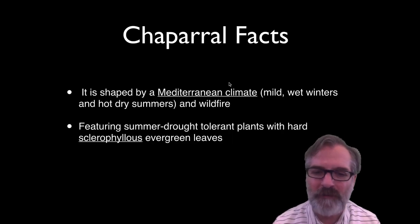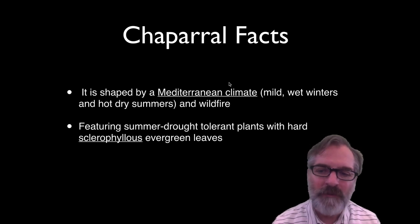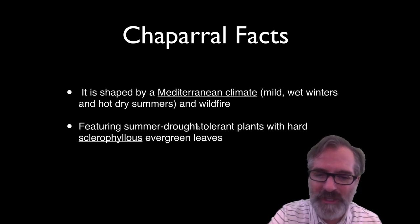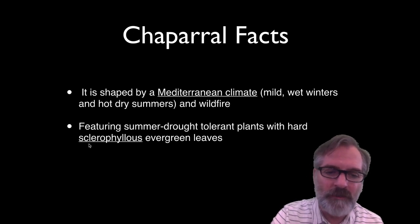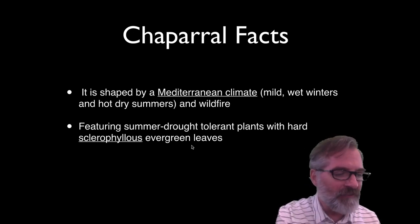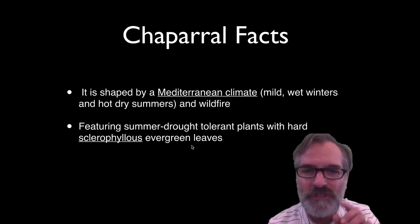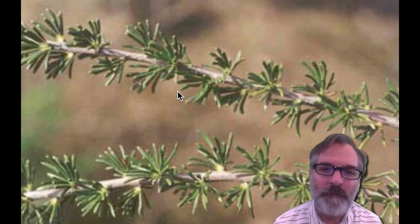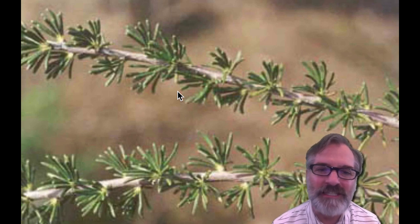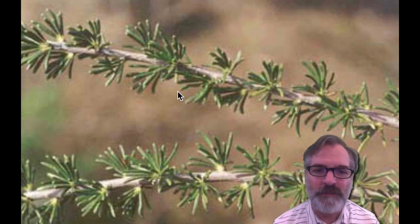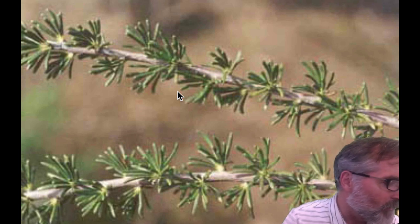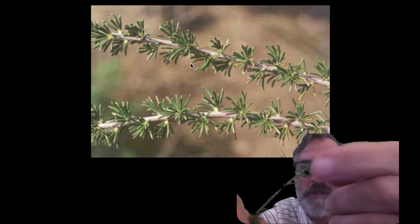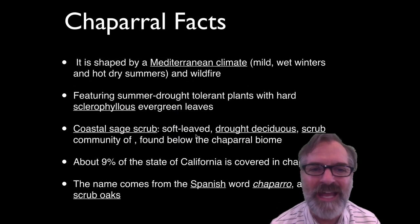Some facts: it's a Mediterranean climate with mild wet winters but really, really hot summers and some wildfire. The plants are very drought-tolerant with hardy sclerophyllous evergreen leaves—so most leaves stay green throughout the year. Sclerophyll is a type of vegetation that has hard leaves and short internodes, the distance between them, which you can see really well on the chamise.